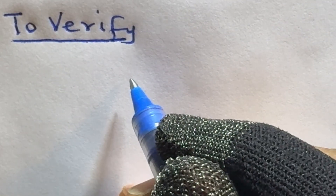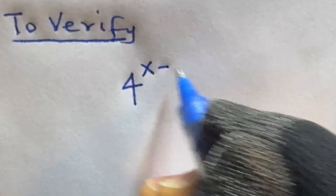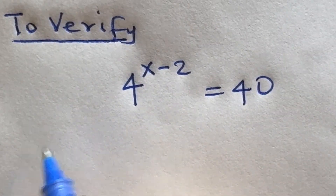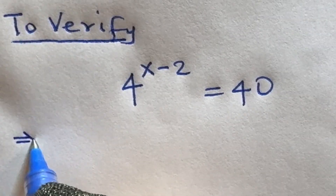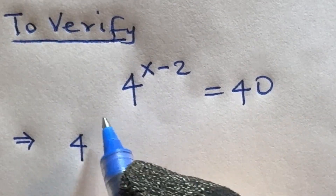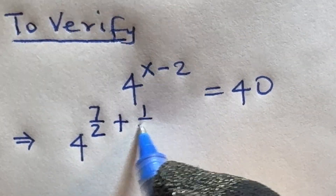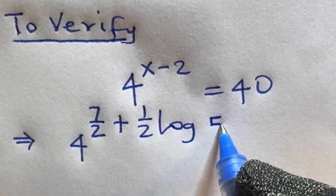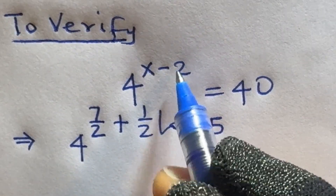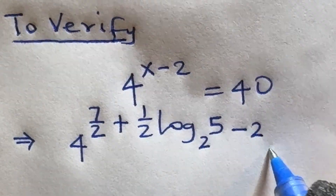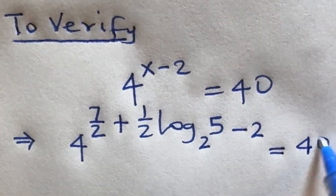So to verify that what we got is correct, we need to put our solution into the original equation which is 4 raised to power x minus 2 is equal to 40. This implies that 4 raised to power 7 over 2 plus 1 over 2 log 5 base 2, minus 2, should equal 40.